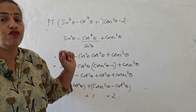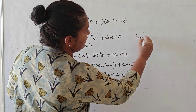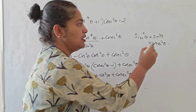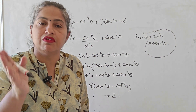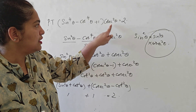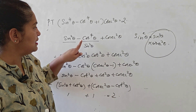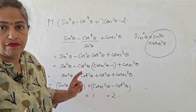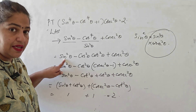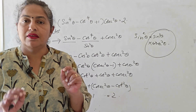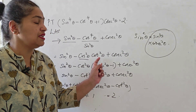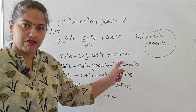Opening the bracket: cosec²θ × sin⁴θ = sin²θ × sin²θ × cosec²θ — sin²θ and cosec²θ cancel, leaving sin²θ. The next term is cos⁴θ × cosec²θ = cos⁴θ/sin²θ. Plus cosec²θ. So LHS = sin²θ − cos⁴θ/sin²θ + cosec²θ. Now cos⁴θ/sin²θ = cos²θ × (cos²θ/sin²θ) = cos²θ × cot²θ.